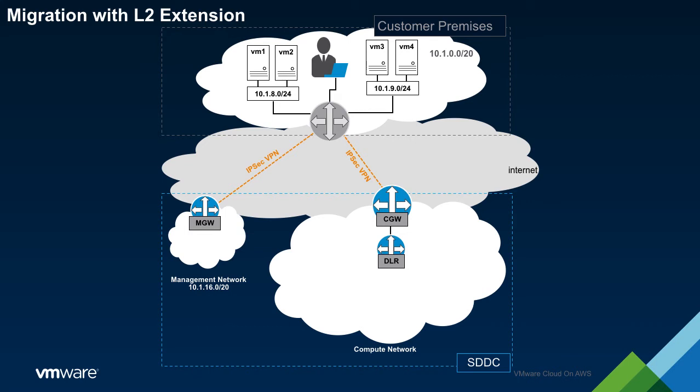This approach allows the workloads to keep their original IP addresses while also providing a fine level of control over the migration process. For this example, we will discuss migrations using HCX.